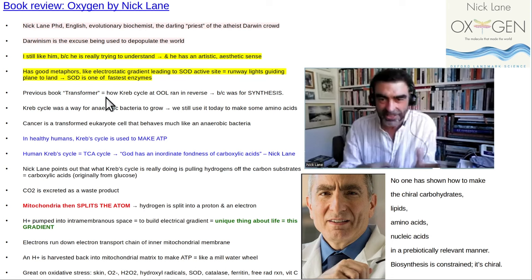His more recent book, Transformer, went into even more detail about Krebs cycle, which I like because I'm very interested in it. If you want to understand cancer, you have to be aware that Krebs cycle runs backward in cancer — because cancer is very much like a human eukaryote cell that has gone backwards in time, transforming itself into an anaerobic bacteria. So understanding its metabolism that way is useful.